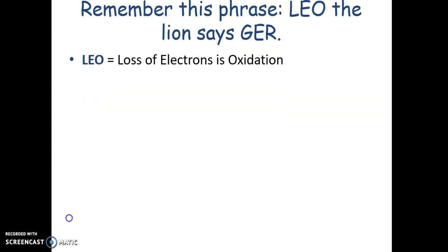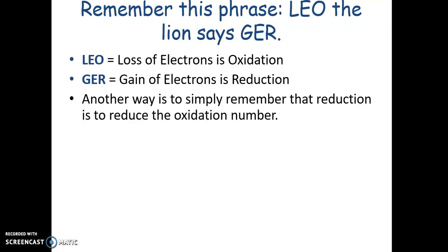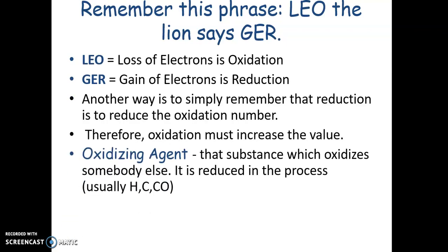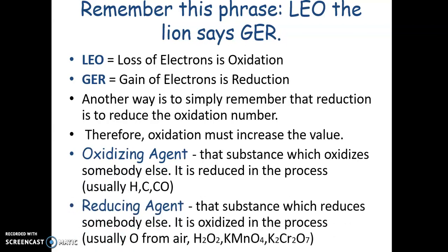Here are some mnemonics and definitions. LEO means Loss of Electrons is Oxidation. GER means Gain of Electrons is Reduction. Another way is to remember that reduction reduces the oxidation number, therefore oxidation increases the value. An oxidizing agent oxidizes something else and is itself reduced in the process.